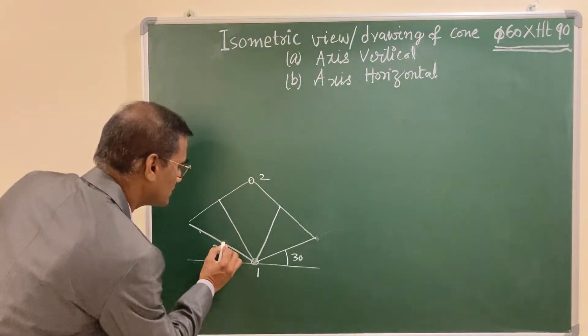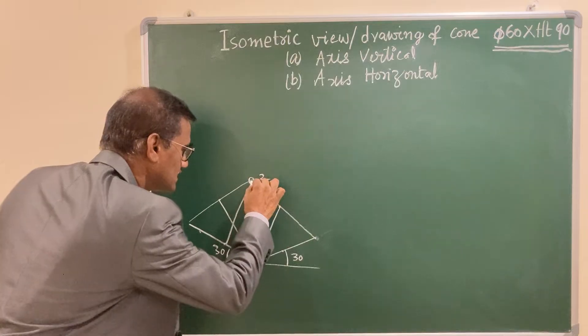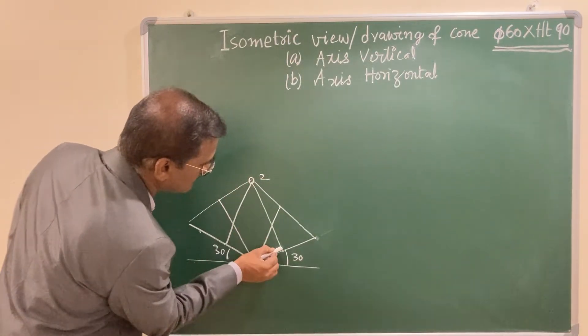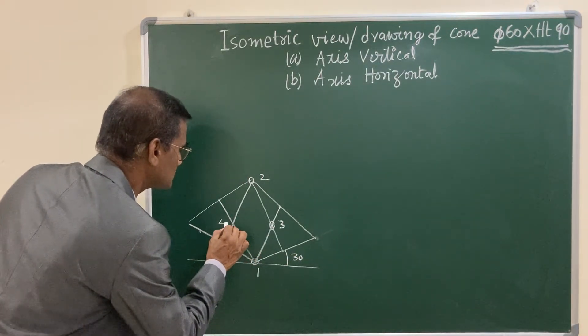So that you are going to get two more centers with intersecting points. And this is your three and this is four.